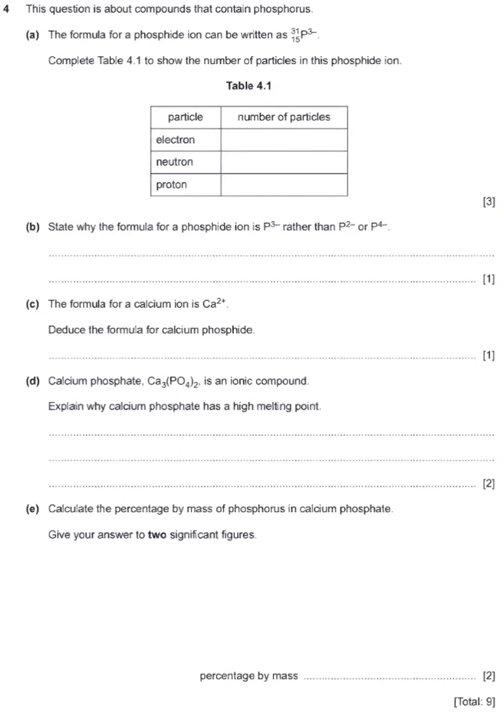This question is coming from bonding. We have question A. Question A is saying: the formula for phosphide ion. So when an element becomes an ion, which means it has gained or lost electrons. It depends.